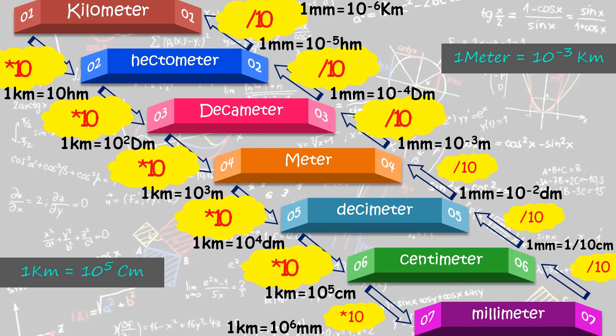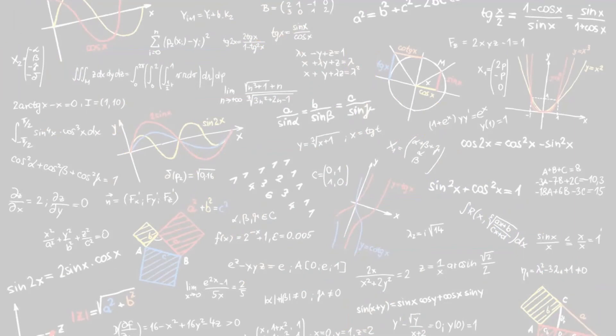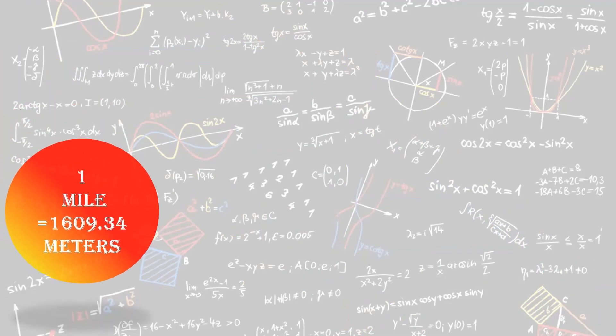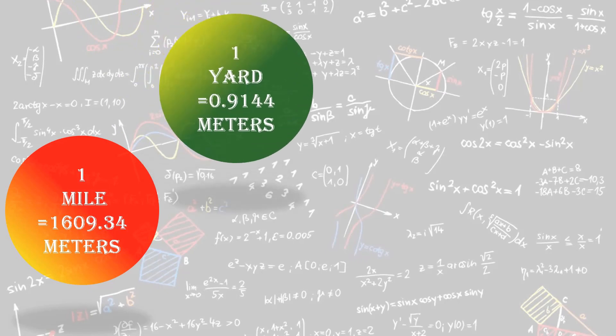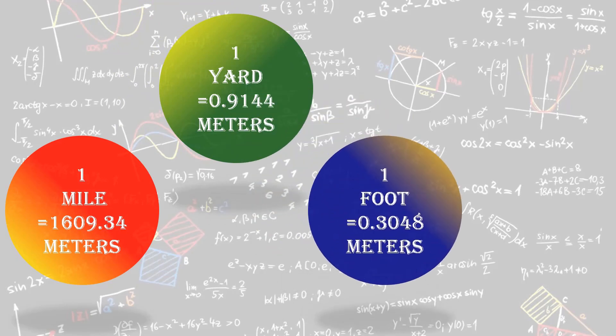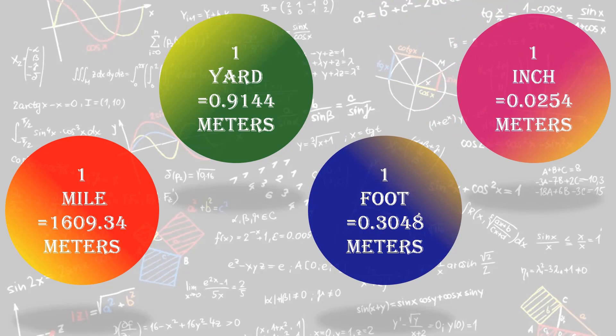In the same fashion you can convert any metric unit into another. There are four more units used to measure distance. First is mile: one mile is equal to 1609.34 meters. Second is yard: one yard is equal to 0.9144 meters. Third is foot: one foot is equal to 0.3048 meters. And the last one is inch: one inch is equal to 0.0254 meters. All four units have been correlated with meters for better understanding.